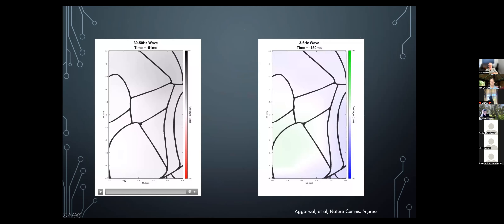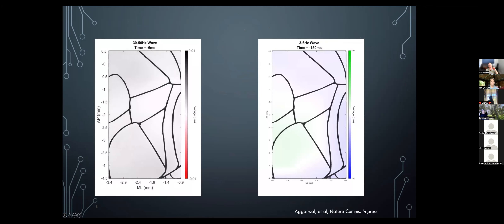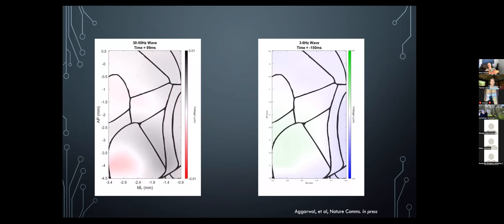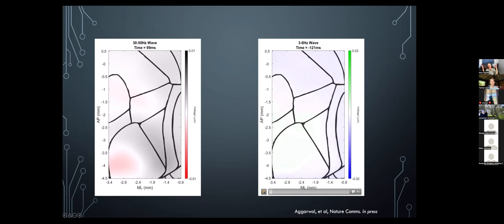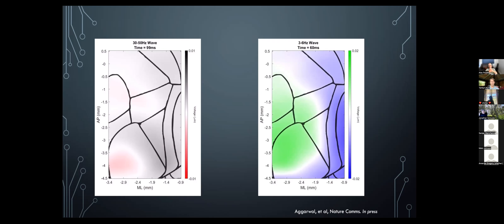Pretty pictures are shown of what the gamma wave actually looks like on the brain. A timer ticks off with zero being when the stimulus arrives. The stimulus comes in, the gamma wave goes up, and then there is a weird reverberation — that's when the echo wave comes back and re-evokes the gamma wave. A similar visualization is shown for the slower wave — same mouse, same data, just filtered differently.